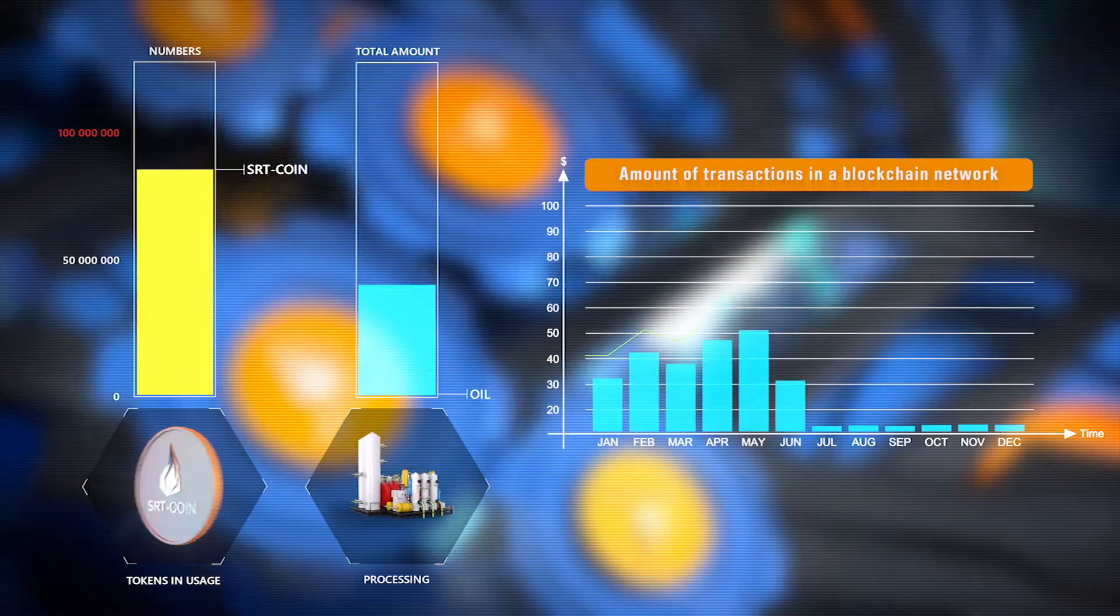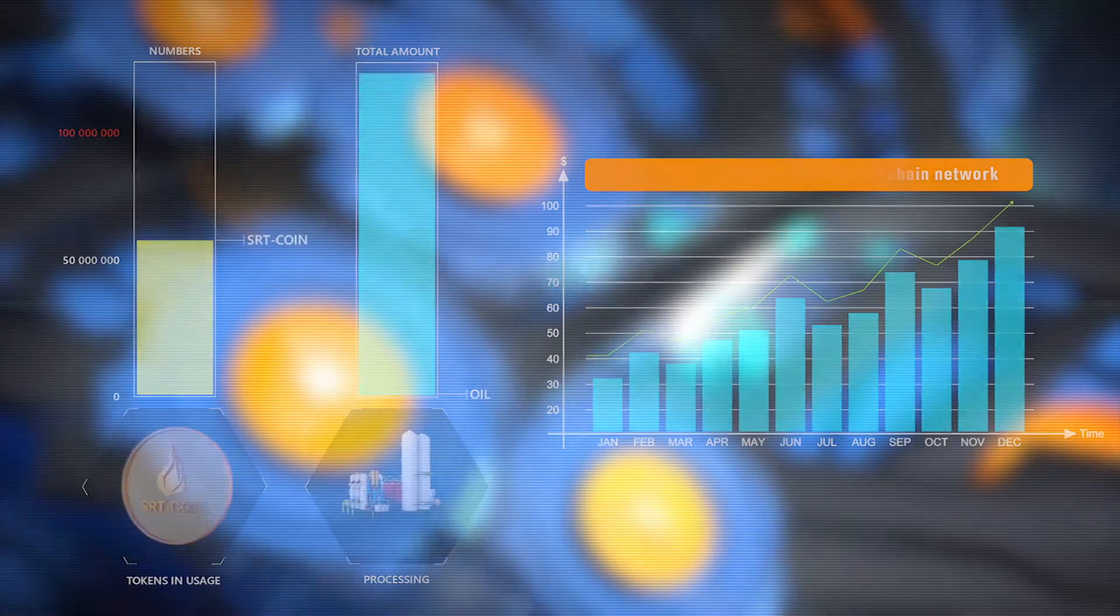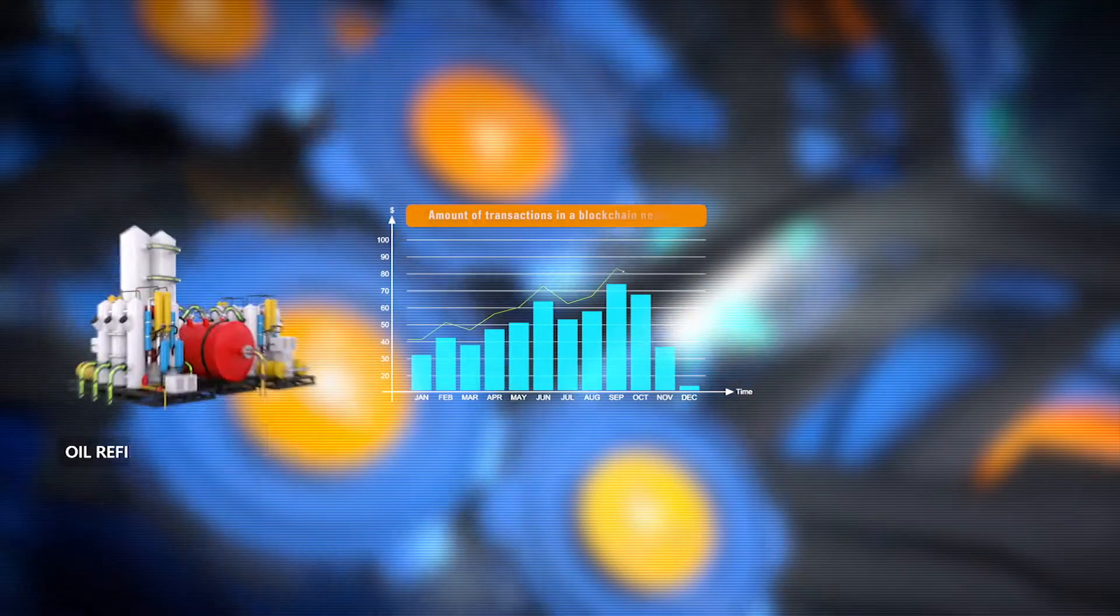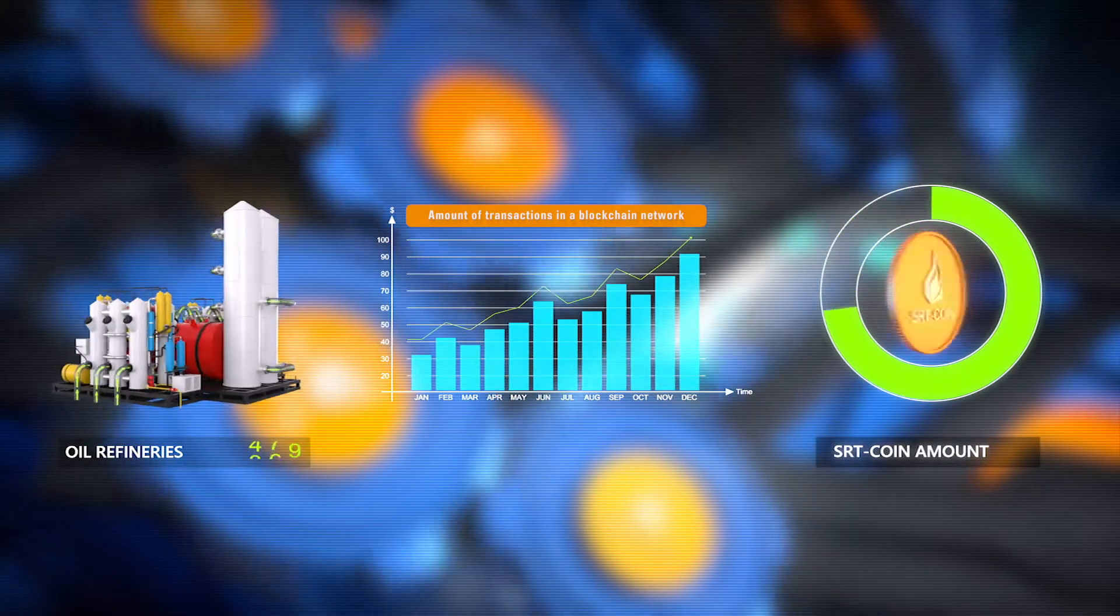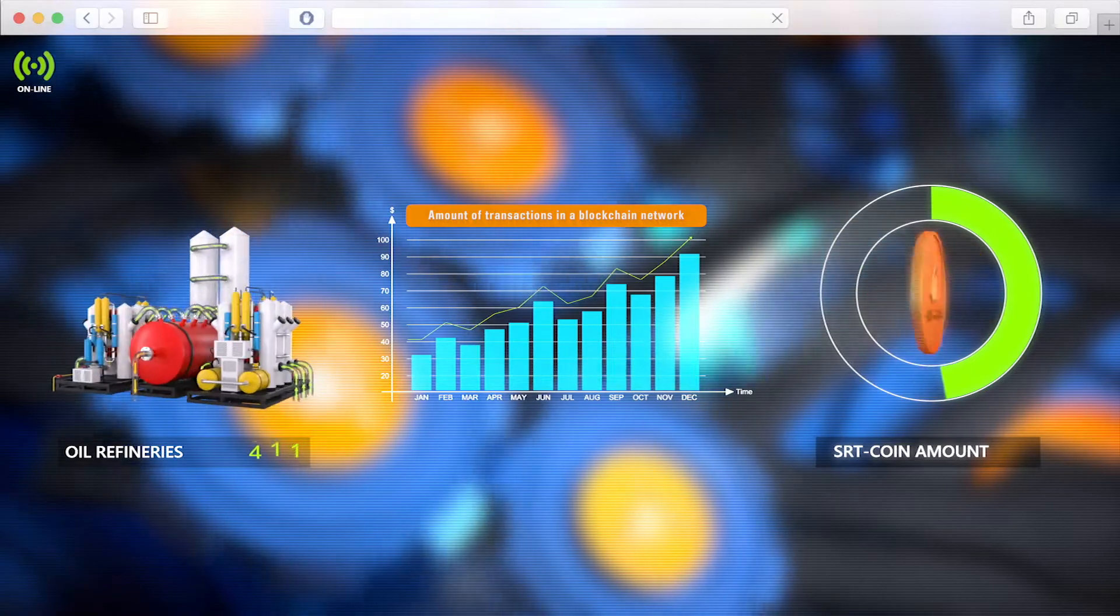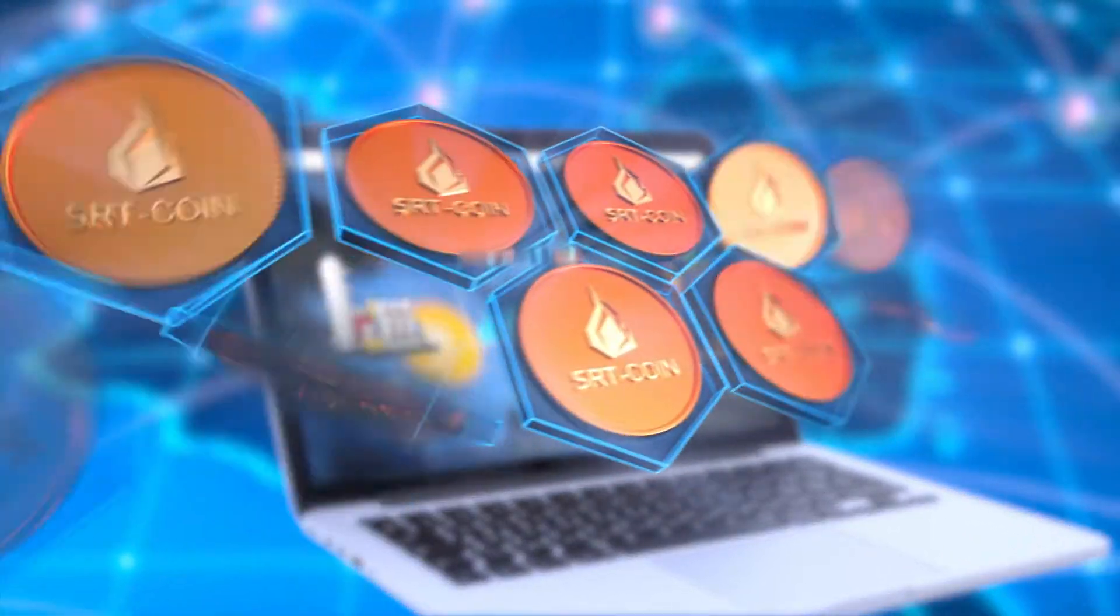Key information on the number of tokens, their price, the number of refineries in the global network, and the volumes of oil processing will be public and available online. The blockchain platform will guarantee the transparency and reliability of the published data.